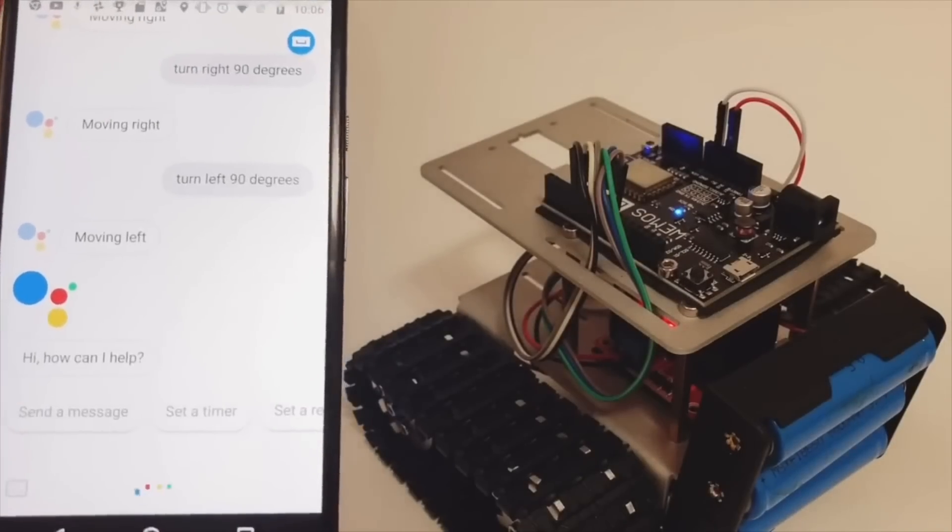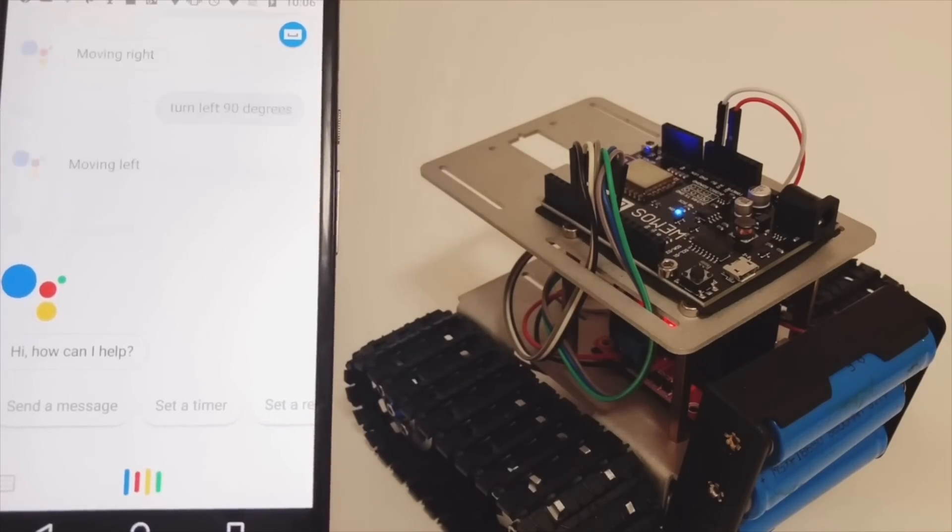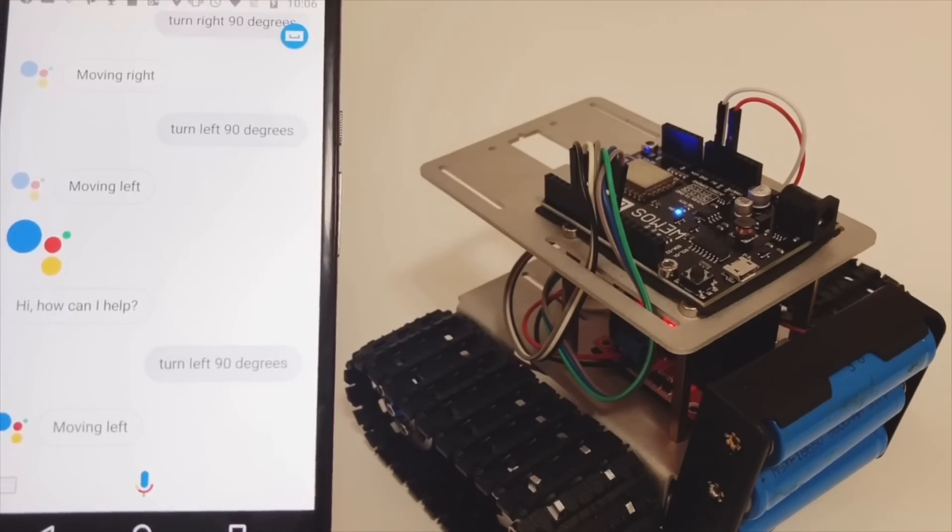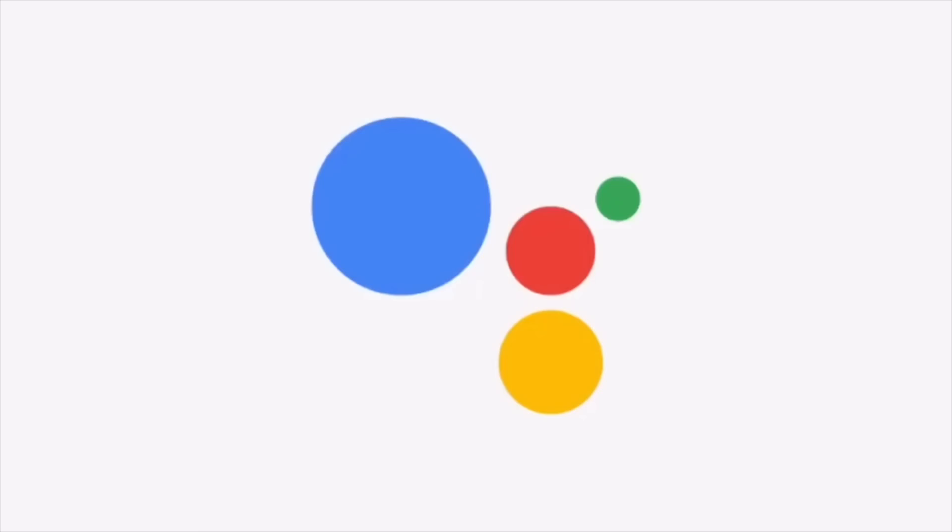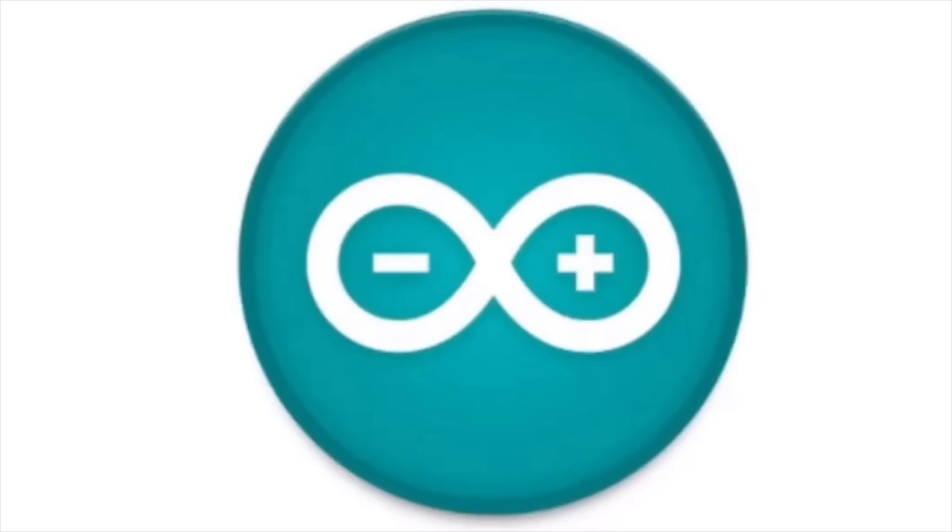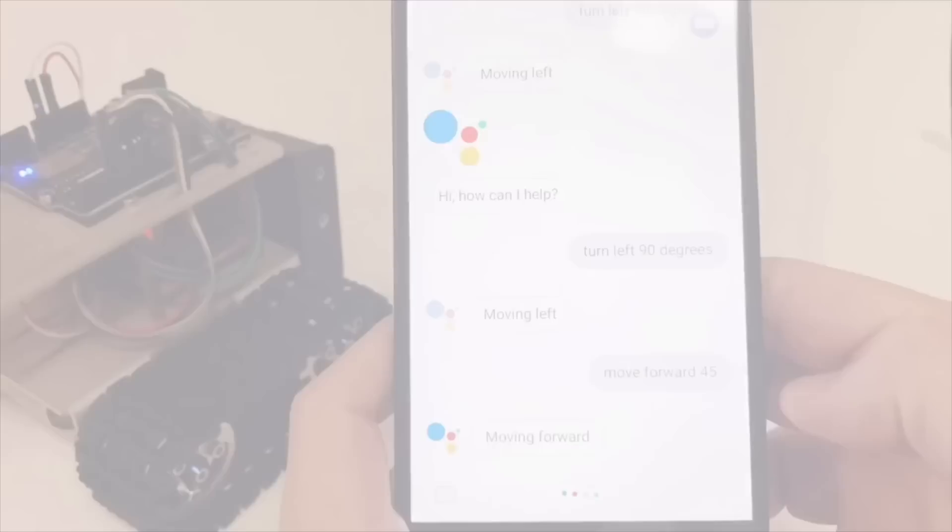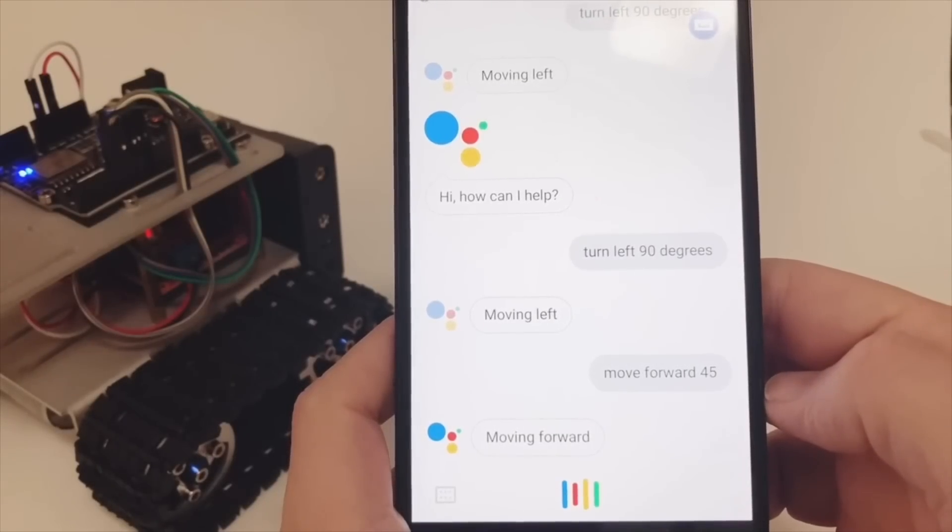This time I wanted to use a different approach. I wanted to build a voice controlled robot. For that, I used Google Assistant, Adafruit.io, and IFTTT platform. As always, the robot was programmed in Arduino IDE. Turn right 180 degrees.